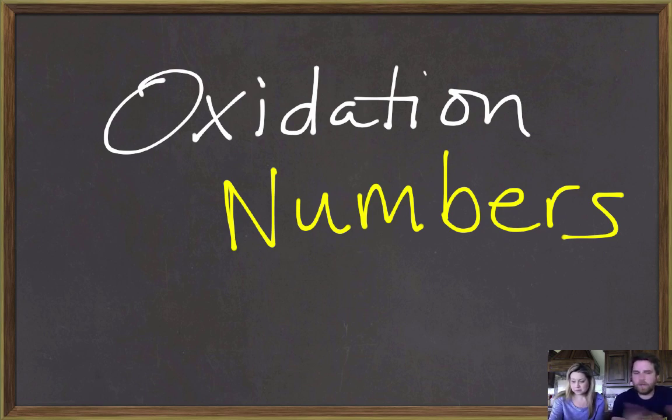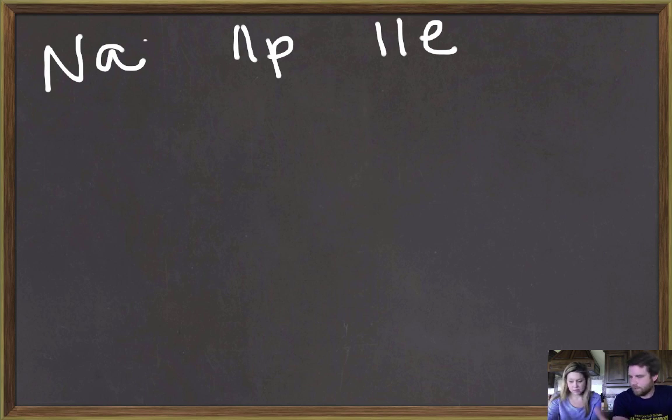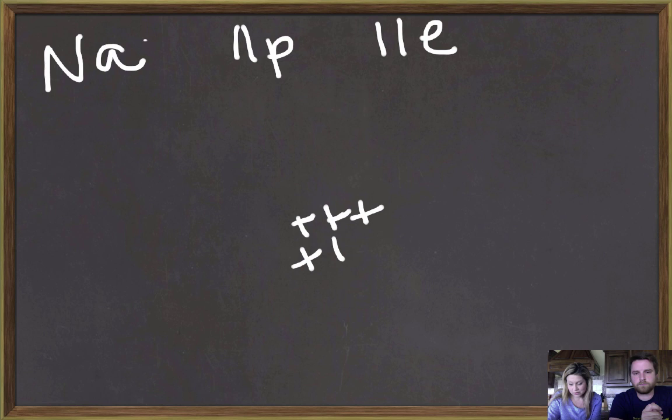So let's talk about sodium first. We know that sodium has one valence electron, so it would be represented by one dot. We have 11 protons and 11 electrons. That's the normal neutral sodium. So if we look in the nucleus, we would have 11 positives: 2, 3, 4, 5, 6, 7, 8, 9, 10, 11.